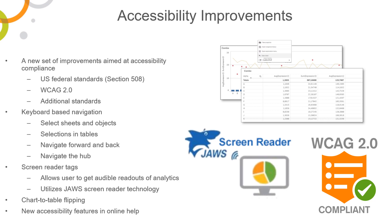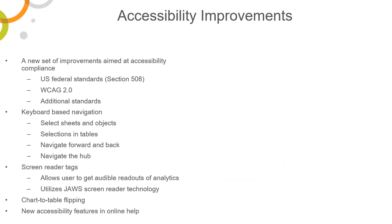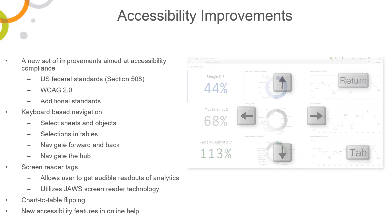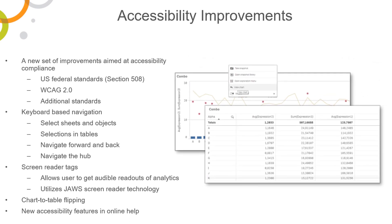Our screen reader tags take advantage of the JAWS screen reading software available from Freedom Scientific. In addition, visualizations can now be selected via keyboard shortcuts with the ability to navigate to and select table cells. There is also the added ability to switch from chart to straight table for value inspection and selection.